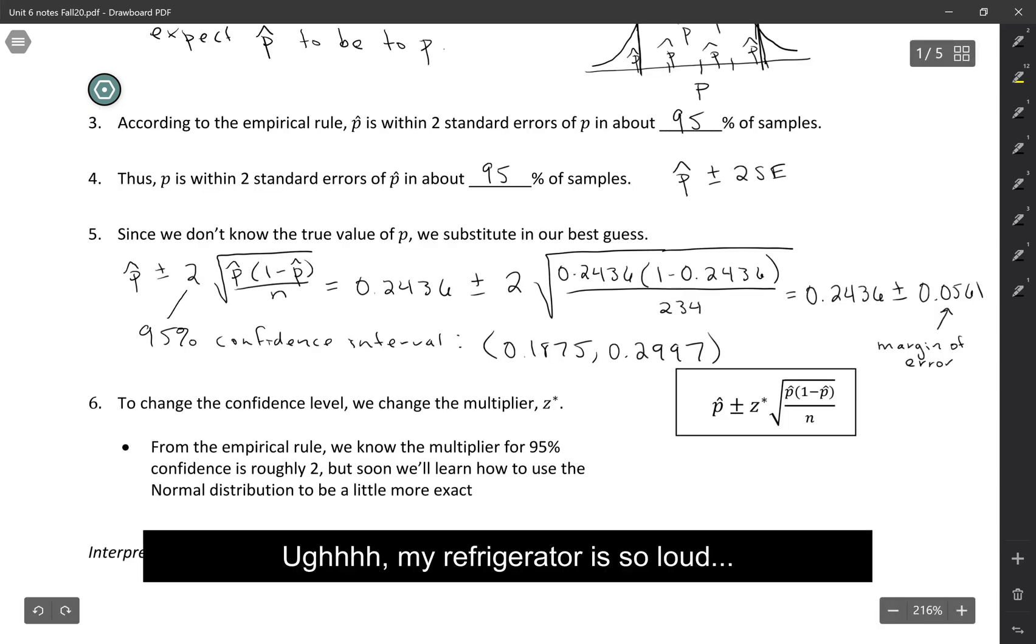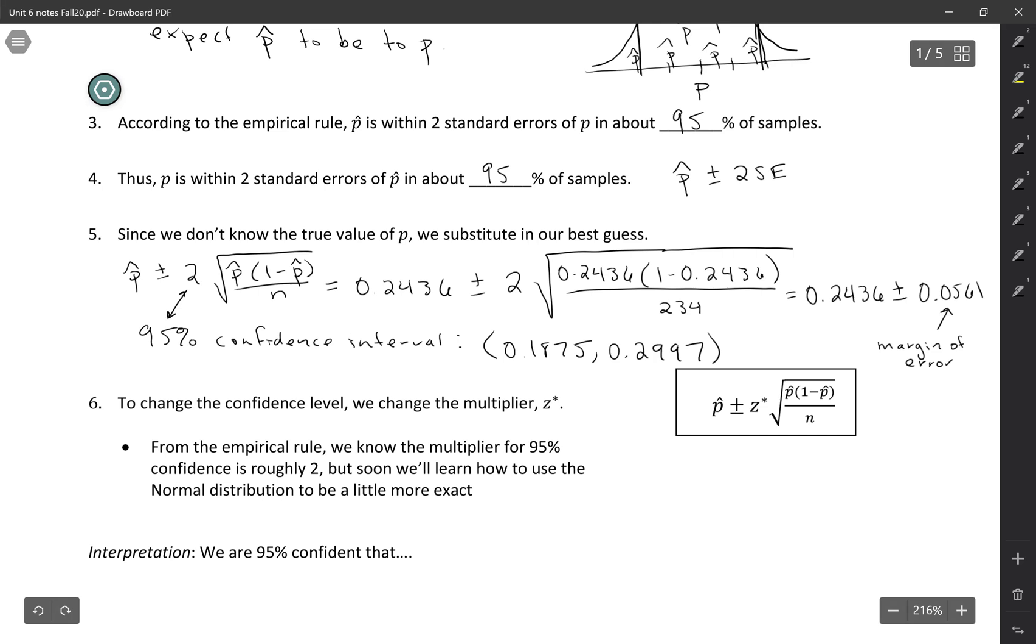So notice that this two, this multiplier corresponds to the 95%, right? That's coming from the empirical rule. So we know that the multiplier for 95% confidence is roughly 2.